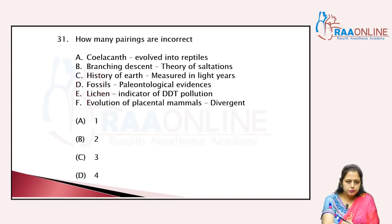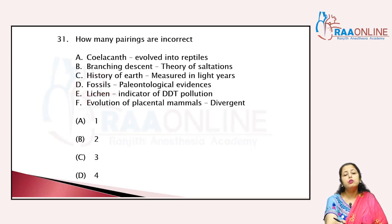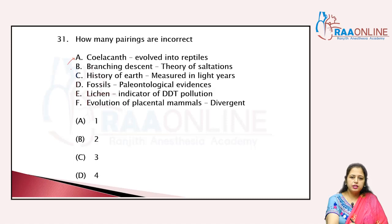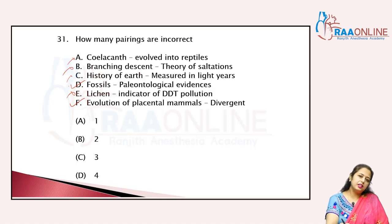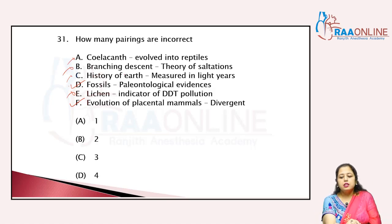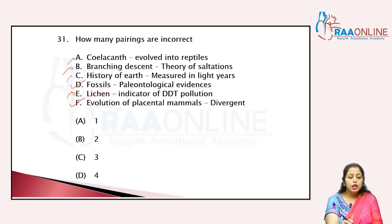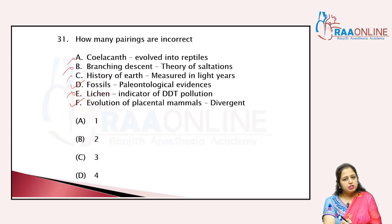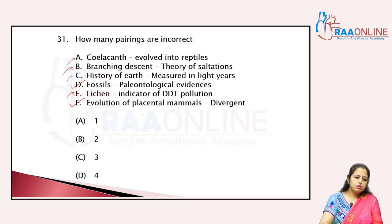How many pairs are incorrect? Coelacanth evolved into reptiles — no, coelacanth is a marine fish, so that is wrong. Branching descent is the theory of natural selection — not saltation, so that is wrong. History of Earth is measured in MYA, not light years. Fossils are paleontological evidence — correct. Lichens are indicators of DDT pollution — no. Evolution of placental mammals shows divergent evolution — evaluation needed. The answer is four statements are wrong.